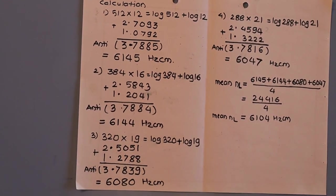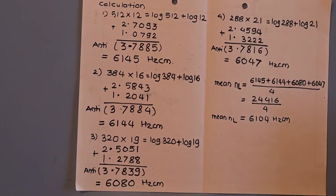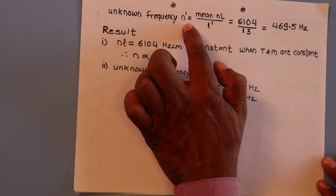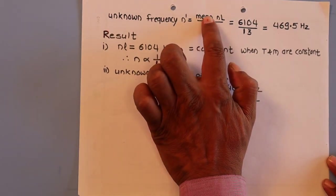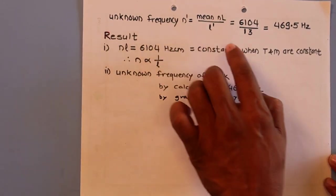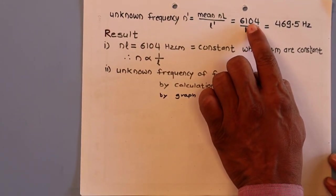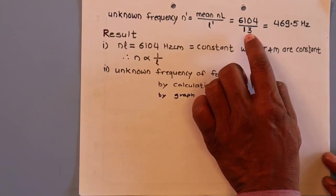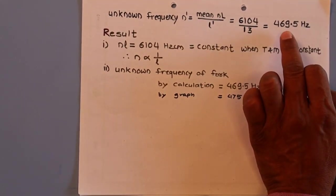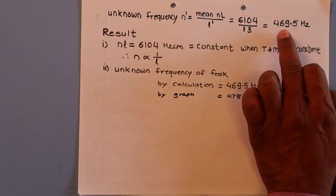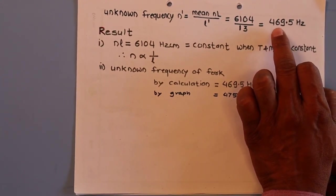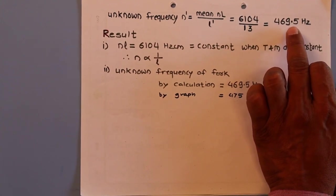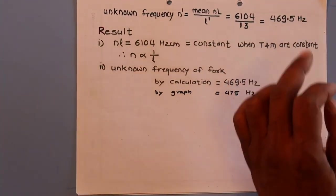Now we find the unknown frequency. The formula is N' = mean N×L / L', where mean N×L is 6104 and L' is 13 cm. By calculation, the unknown frequency is 469.5 Hz.